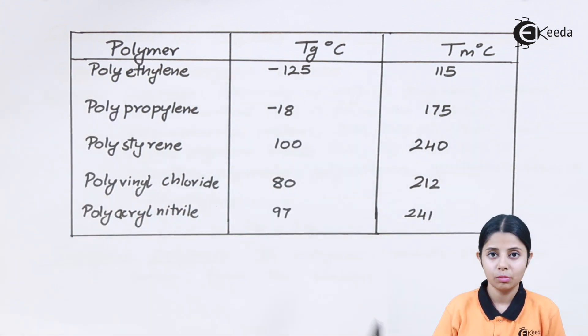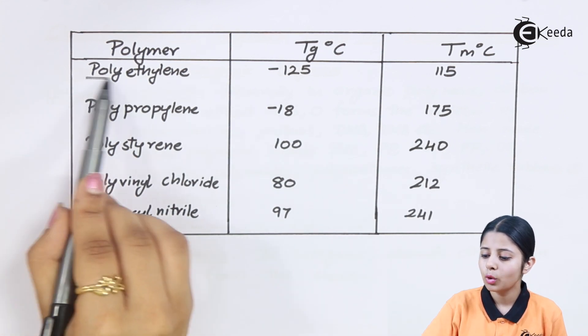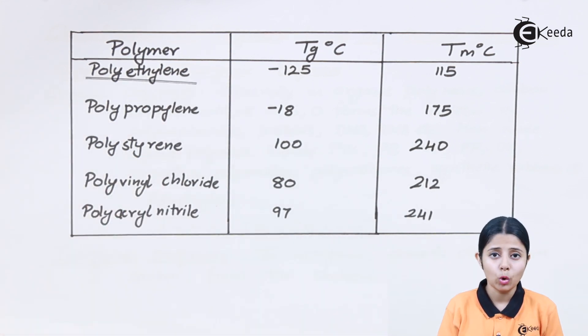The Tg's of them and the Tm's of them. The first polymer is polyethylene. Polyethylene is the normal most commonly used plastic. We get polymer bags of it. The polymer bags are extremely fragile. You can easily break them off and tear them off.